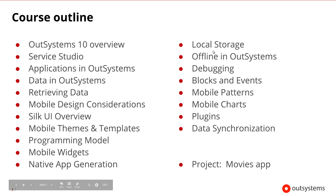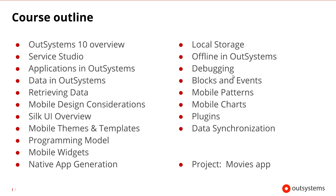From there, we'll begin taking into account offline capabilities. To get things offline, we need to be able to store information locally on the device itself. We'll look at how local storage is handled and the capabilities that OutSystems gives us to make implementing the different types of offline scenarios a little bit easier. Then we'll review debugging, which includes both debugging on the client and server side. We'll also talk about some of the tools that allow us to debug on the client side.